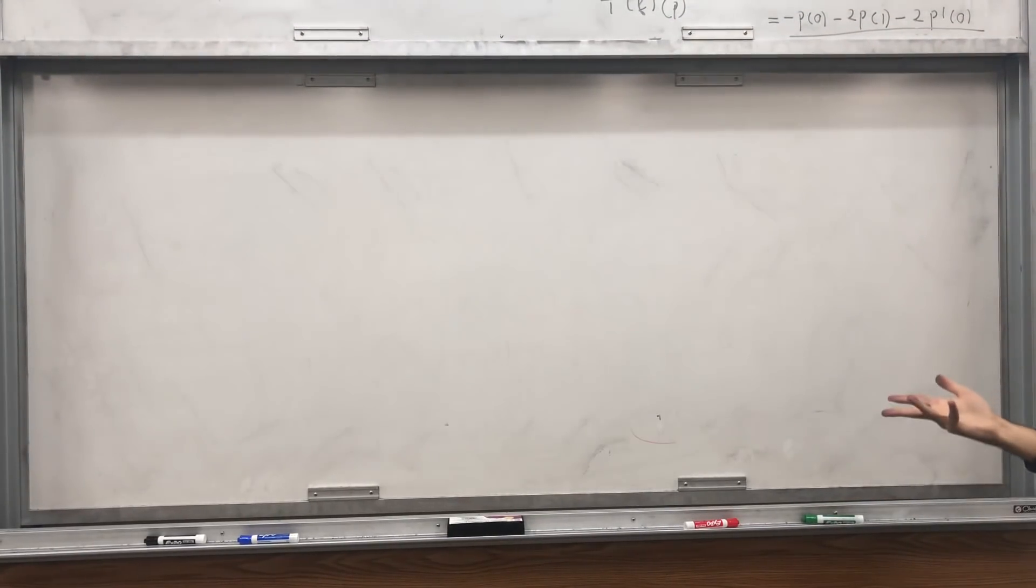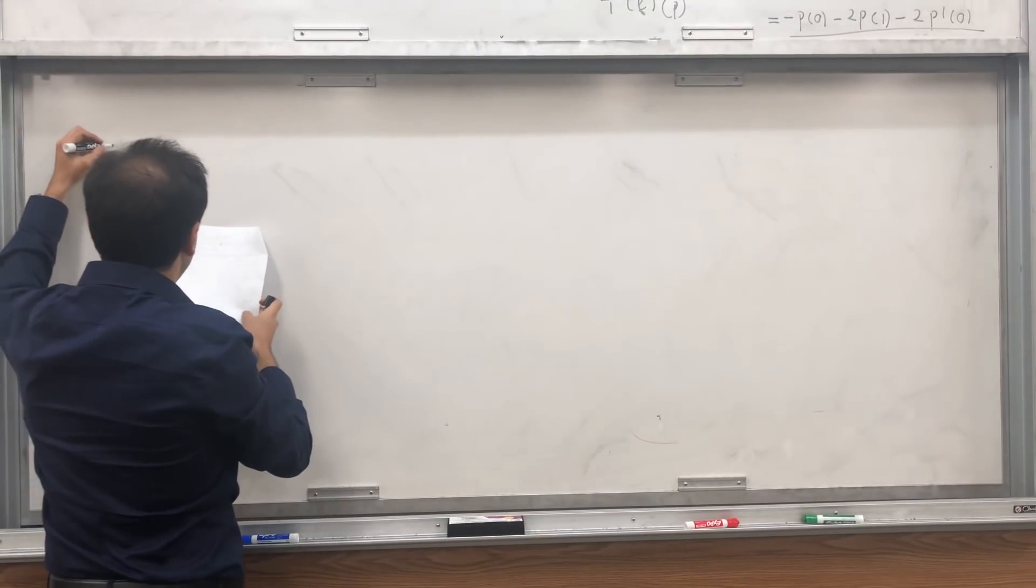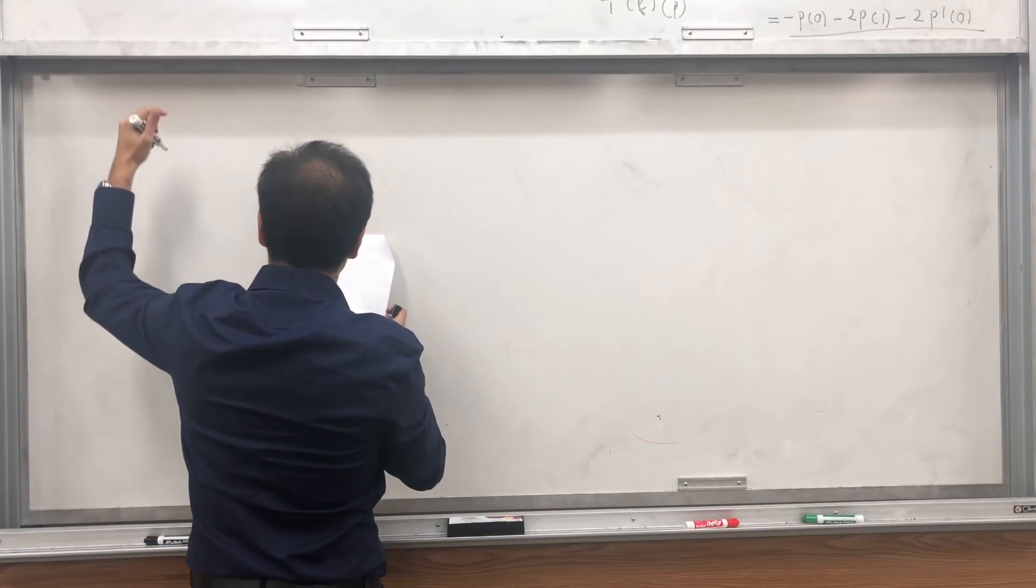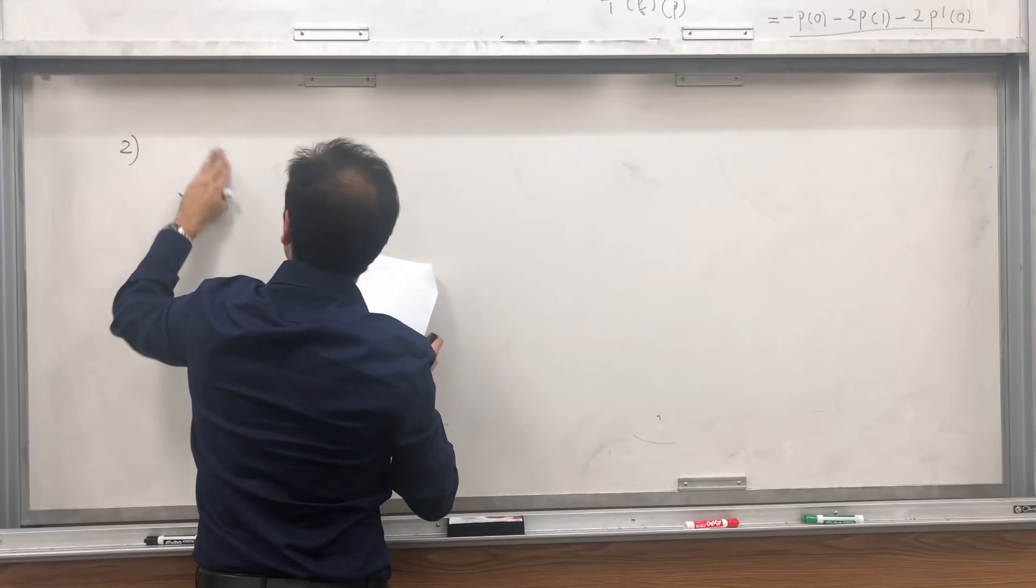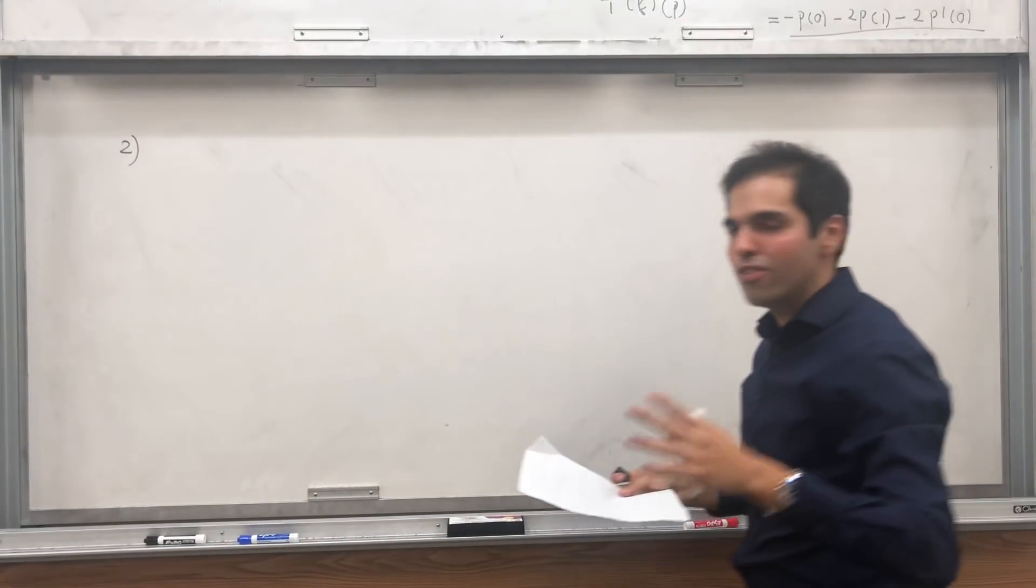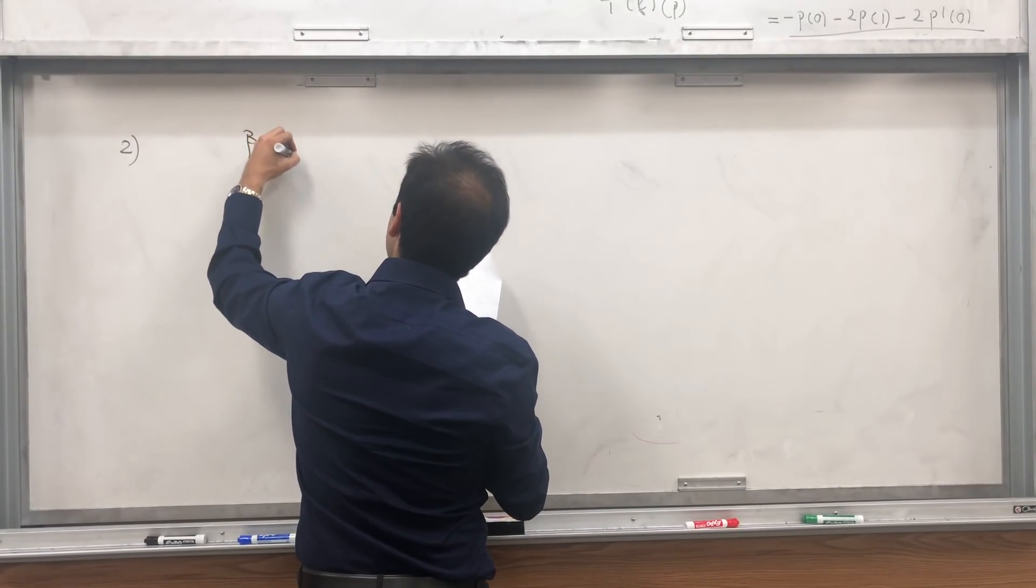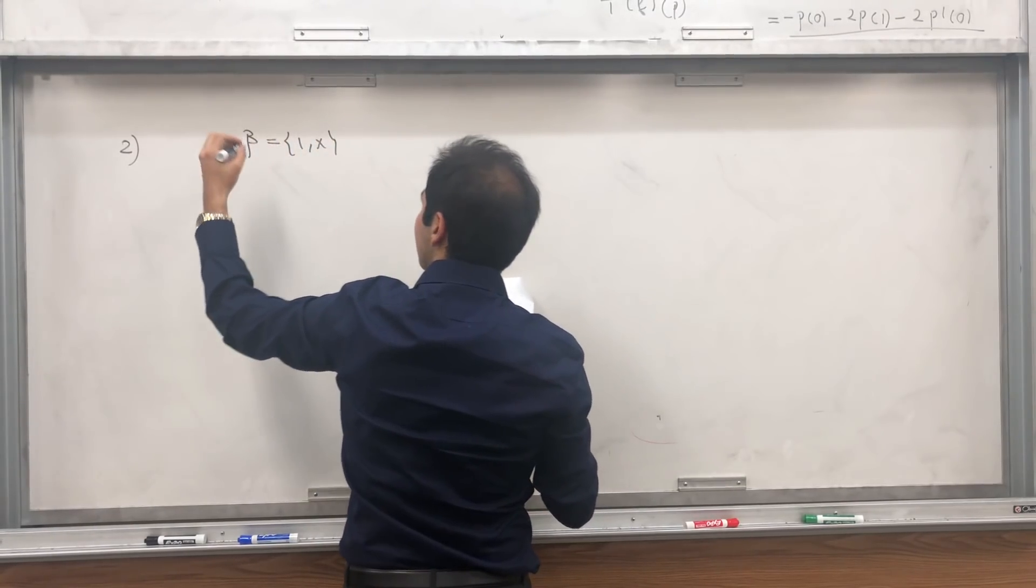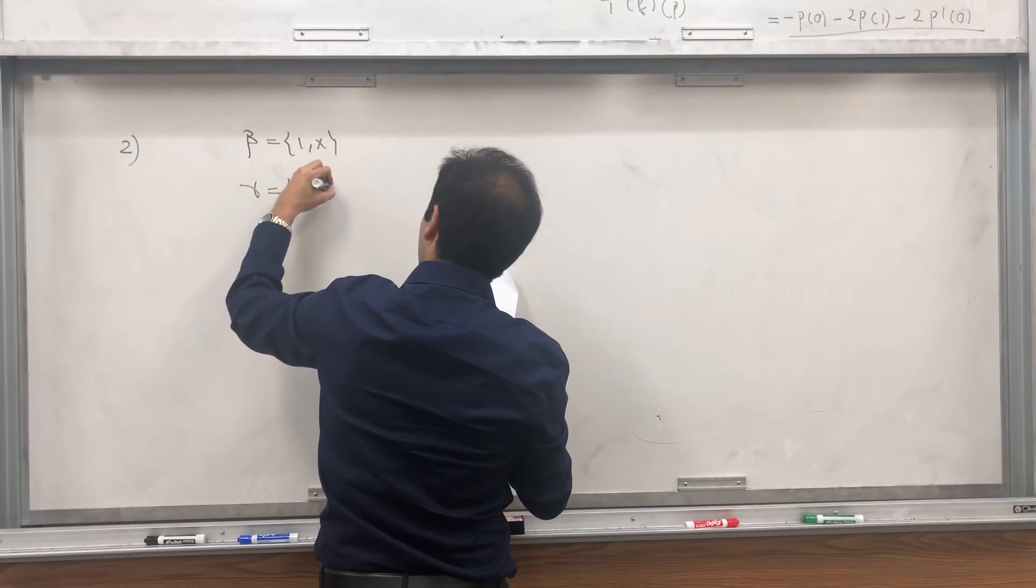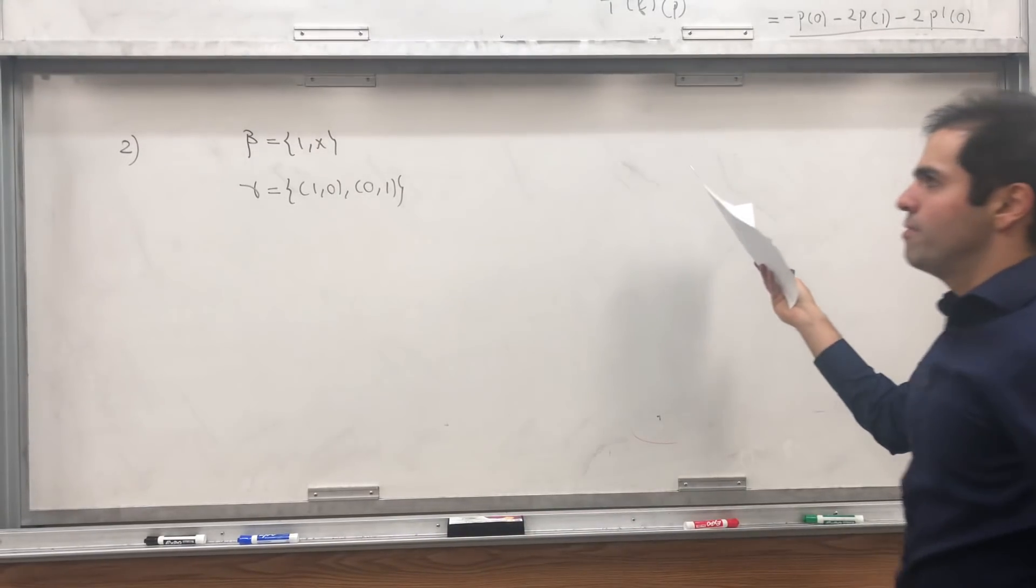All right, and now the second question is, let's calculate the matrix of T transpose. And we'll compare it to the matrix of T. Well, to find a matrix, we need bases. So first of all, let's take the standard basis of V, 1 and x basis for V, and then gamma, which is the standard basis of W, the standard basis of R2.